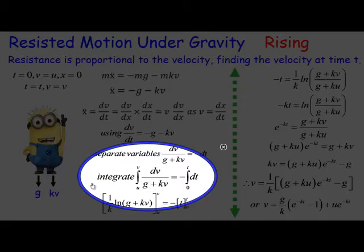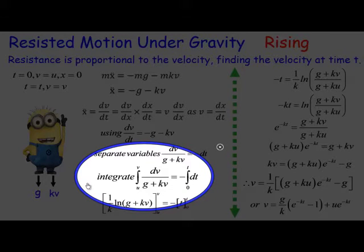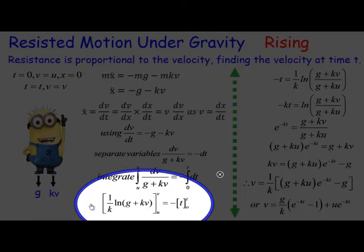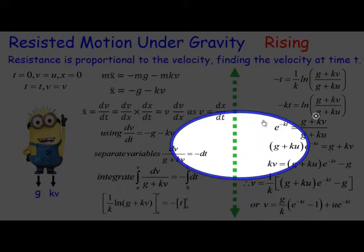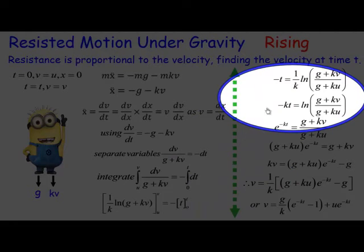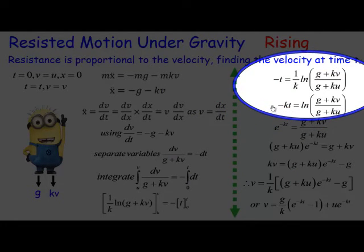Both sides from velocities starting at initial velocity u up to velocity v and times going from 0 to t. And you can see here it turns into a log. We need to evaluate the log. So look here we are: minus t equals 1 on k ln(g + kv) all over g + ku.